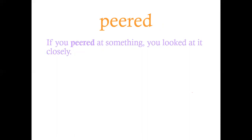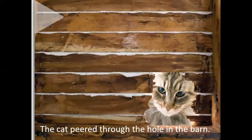The next word is peered — to look at something closely. If you peered at something, you looked at it closely. Notice that if we have -ed after the verb, we read the root word first. The cat peered through the hole in the barn.